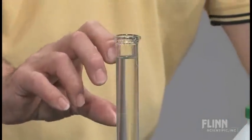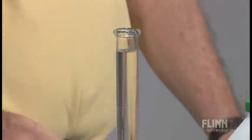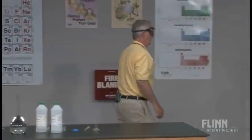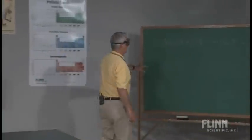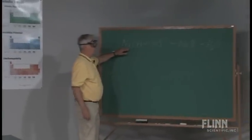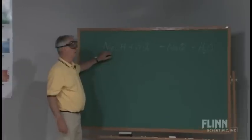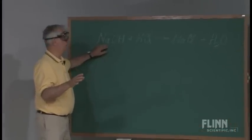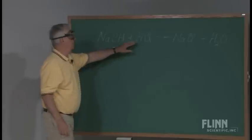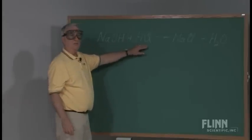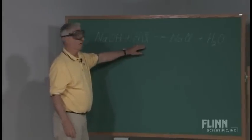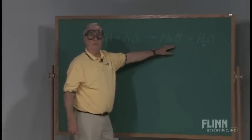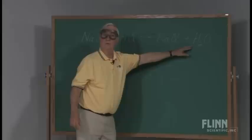Now where did this extra volume come from and exactly how much is it? Well, if we go to the blackboard and look at the equation for this — for the general chemistry class — one mole of sodium hydroxide, and again 500 milliliters of 2 molar is one mole, plus the same quantity of hydrochloric acid at the same concentration, yields one mole of sodium chloride and one mole of water.